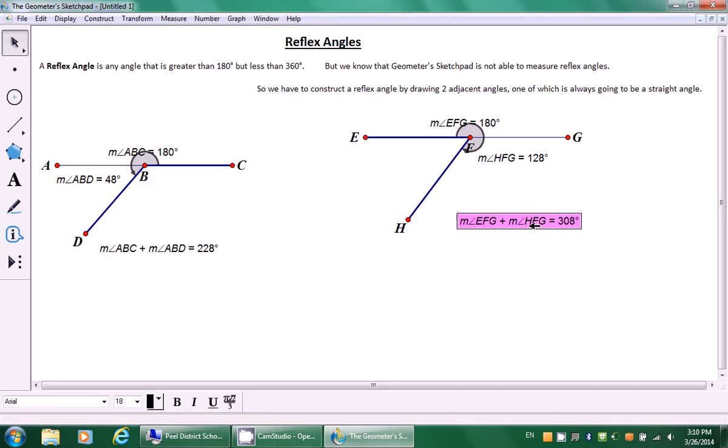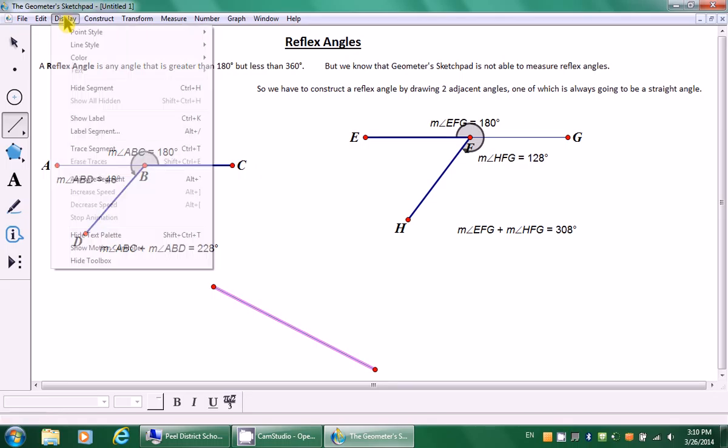So let's bring down the calculator. Measure, sorry, number, calculate. I'm going to click on this angle measurement plus this angle measurement. Click OK. And there we go. You notice how this reflex angle is quite a bit larger than this one. And that makes sense because on this angle, we had a straight angle plus an acute angle. In this angle, we have a straight angle plus an obtuse angle.